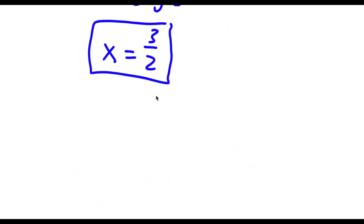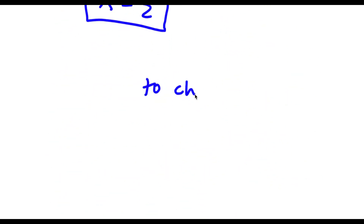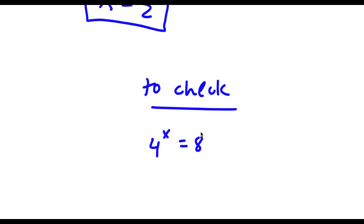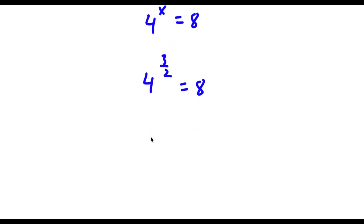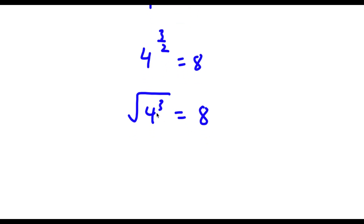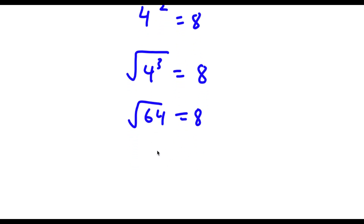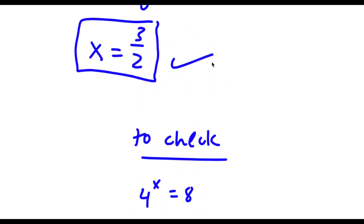Now to check: I have 4 to the power of x equals 8, and we know x equals 3 over 2. So I have 4 to the power of 3 over 2 equals 8. 4 to the power of 3 over 2 is the same thing as the square root of 4 to the power of 3. 4 to the power of 3 is 64, so I have the square root of 64 equals 8. And the square root of 64 is indeed 8. So 8 equals 8 — my solution is confirmed correct.